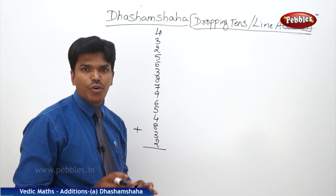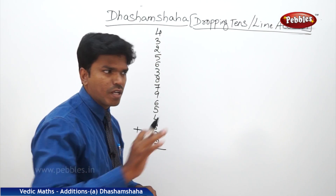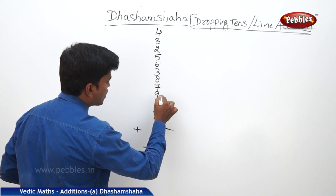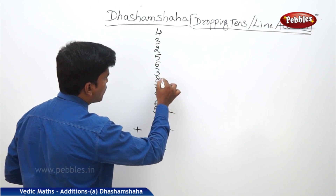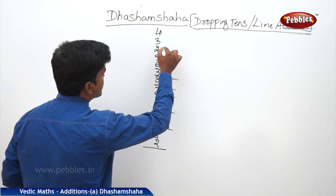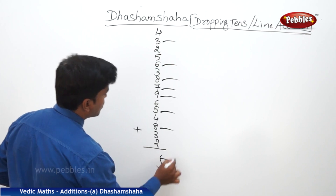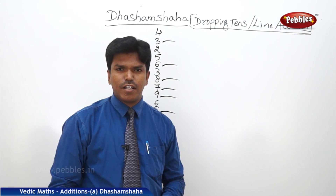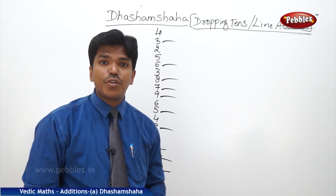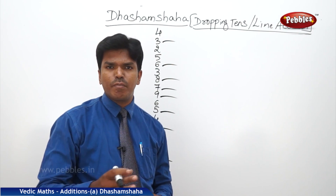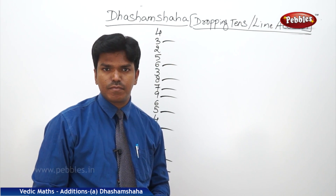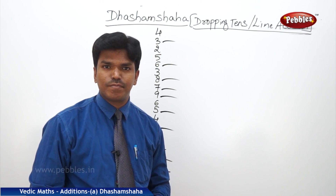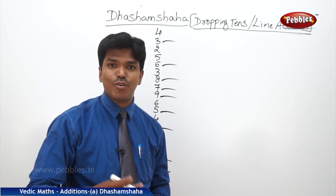Now let us check how much time we are going to do this problem. Ready? So the answer is 75. This much big a problem, we are going to do within less time — maybe probably within 10 seconds, maybe less than 10 seconds also. How is it possible?